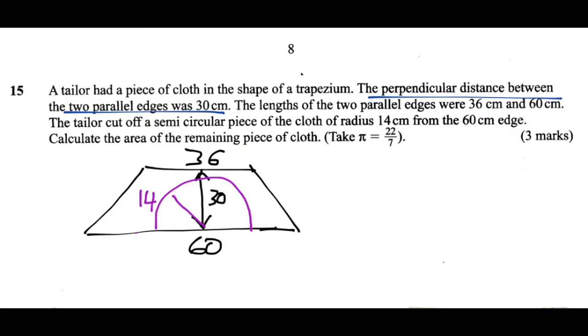So what we're going to do is we're going to find out the area of this whole trapezium shaped piece of cloth before the semicircle was cut into it. Then we're going to find out the area of the semicircular piece that was cut out of the trapezium shaped cloth.